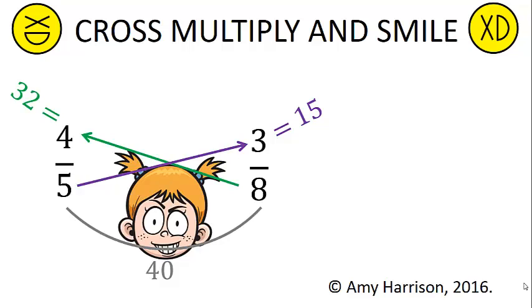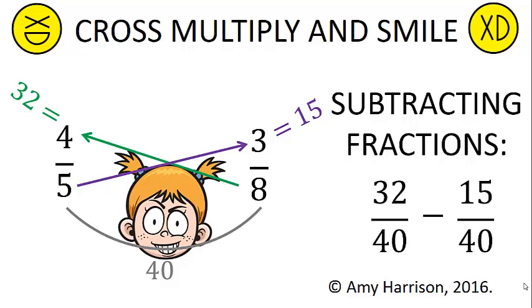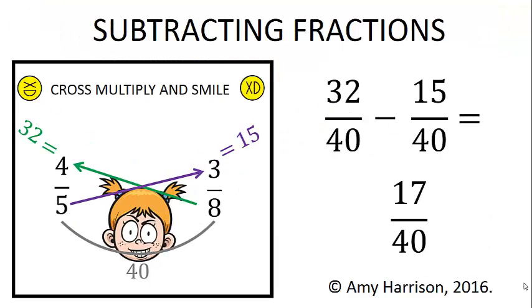Finally, we can use cross multiply and smile for subtracting. In this example, we would just subtract 32 minus 15 to get 17. 17 fortieths cannot be reduced, so that is our answer.